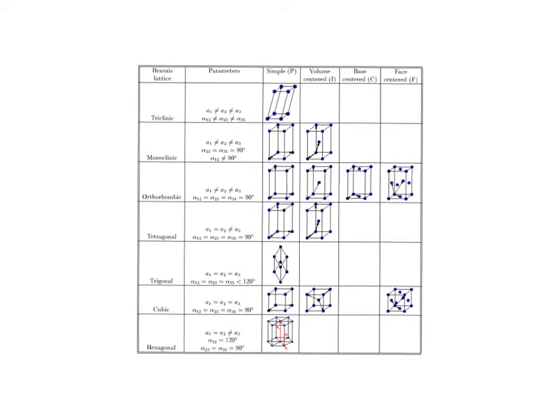Moving further down the list, we come to the cubic system, which happens to be the most symmetric of them all: A1 equals A2 equals A3, and all the angles are equal to 90 degrees, creating a cubic unit cell. Last in the list is the hexagonal system, where A1 equals A2 and A3 is something different; two of the angles are 90 degrees and one is 120 degrees, leading to a hexagonal lattice. So those are the seven crystal systems, or crystal classes.